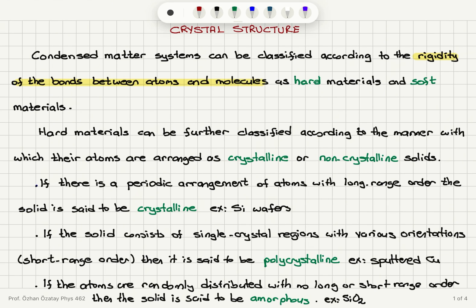We have the distinction between hard materials and soft materials based on the rigidity of the bonds between atoms and molecules. In hard materials, we have a further classification according to the manner in which their atoms are arranged. Atomic arrangement leads us to the classification as crystalline or non-crystalline solids. Crystalline solids have a periodic arrangement of atoms with long-range order.